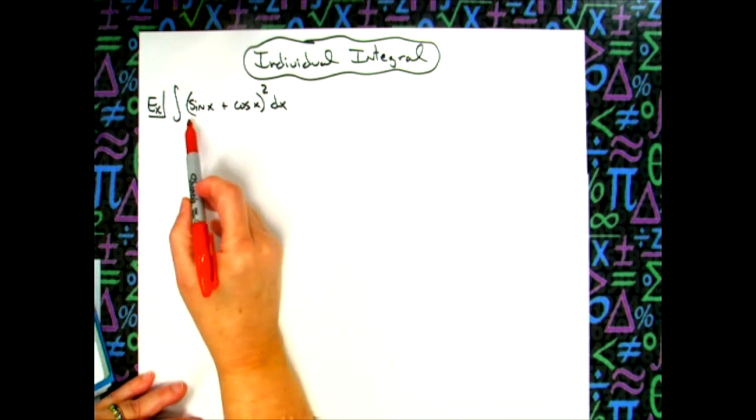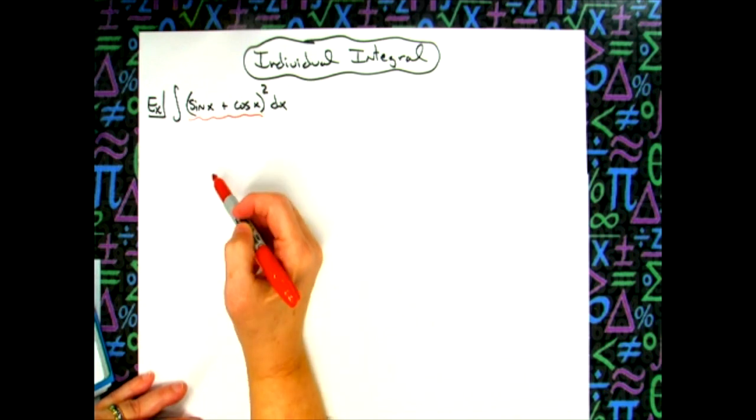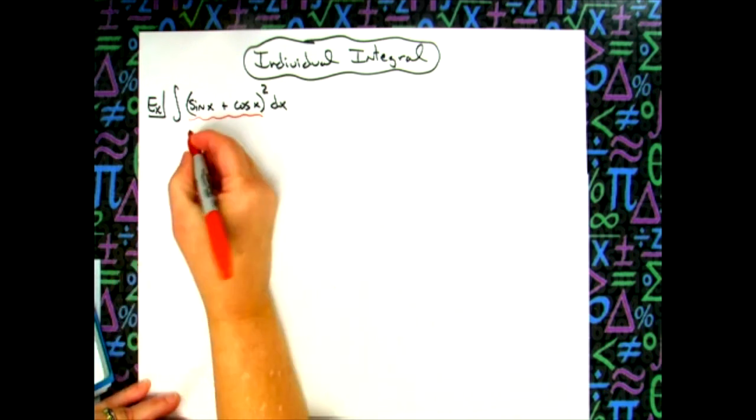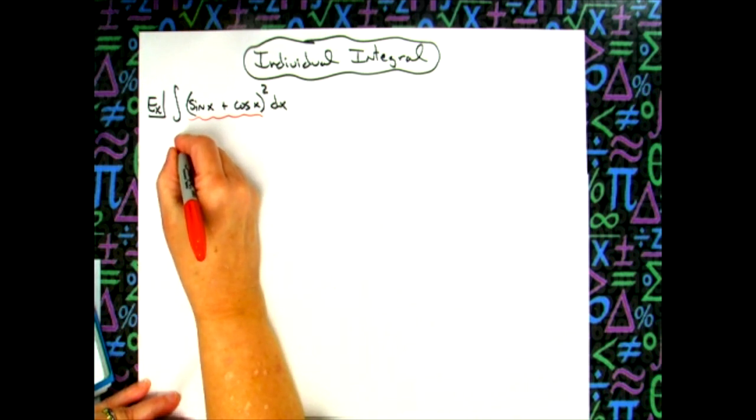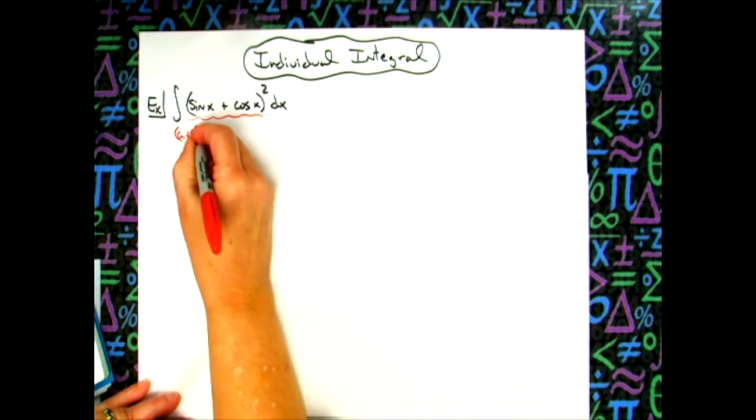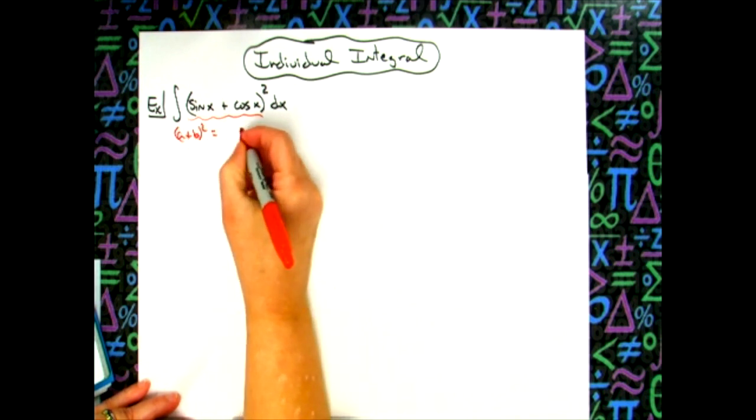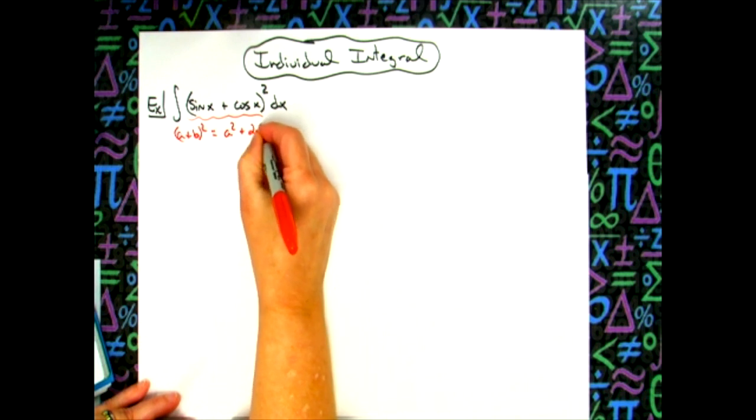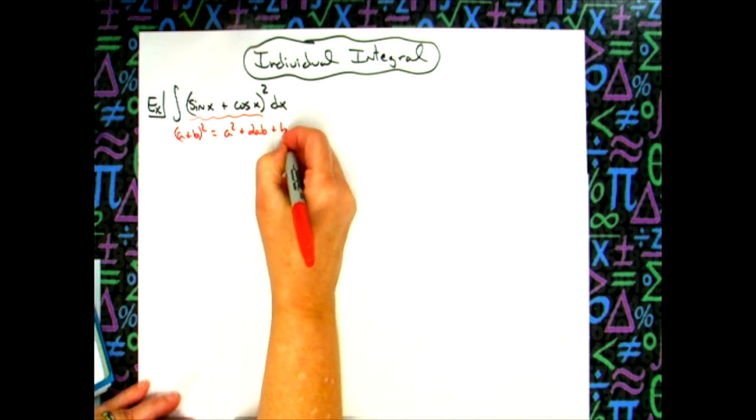Now the first thing that we're going to do is we're going to take this expression and we're actually going to multiply that out. So we've got a formula. You could just foil it because it's two binomials, but there is a formula a plus b to the second power, and you could easily square the first term plus two times the first term times the second term and then plus b squared.